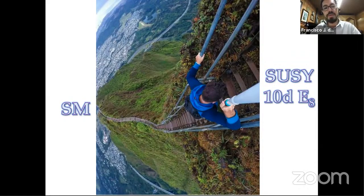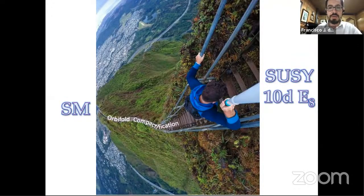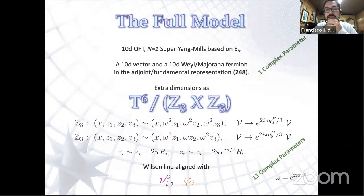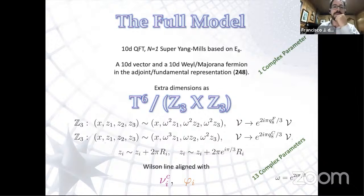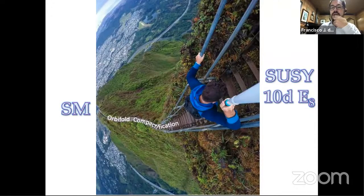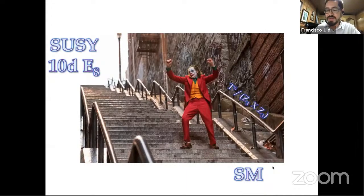This SUSY 10D setup may seem very far from our world, but there are steps to connect them — and that's the orbifold compactification. The full model is presented here as a table of fields; I'm not going to add or change anything. I still have a single superfield, but the extra dimensions are folded using two Z3 twists and a Wilson line. I want to convince you that the staircase going from SUSY E8 down to the Standard Model is really nice to descend.